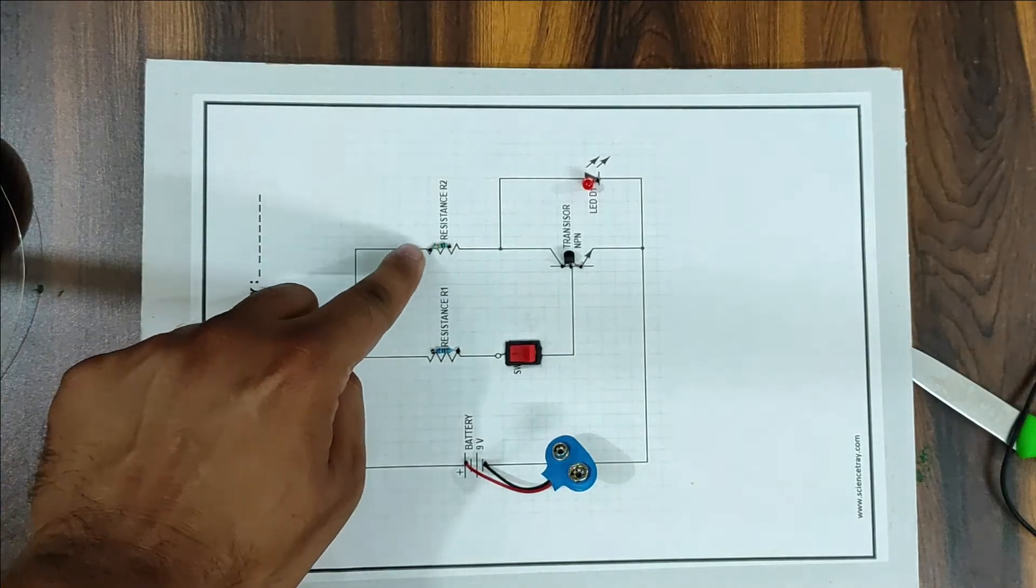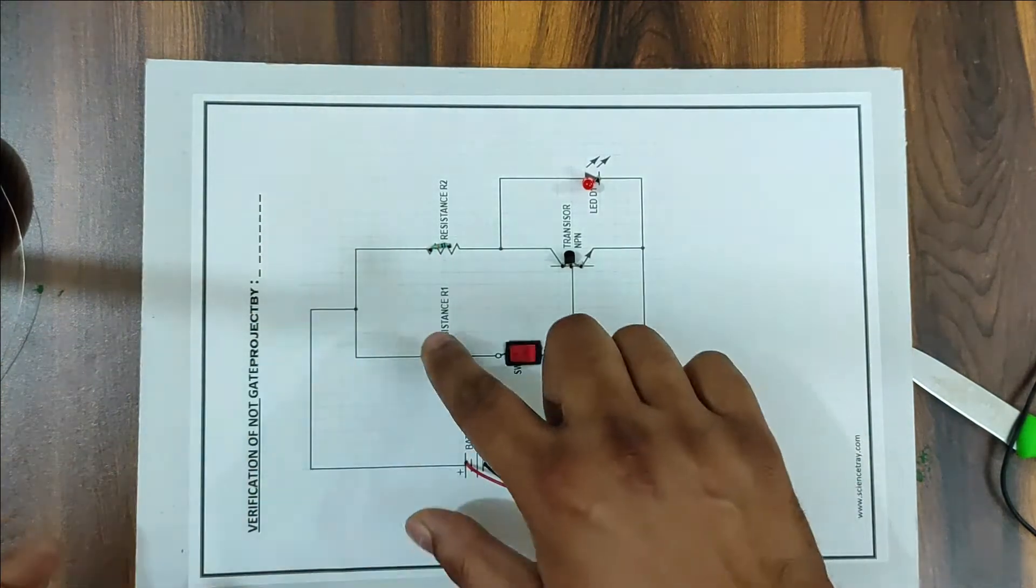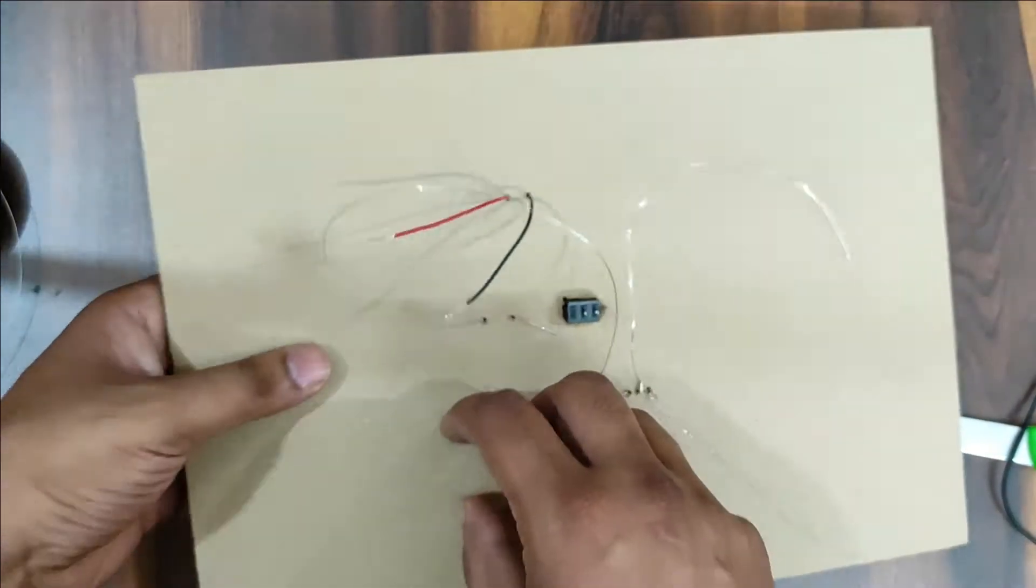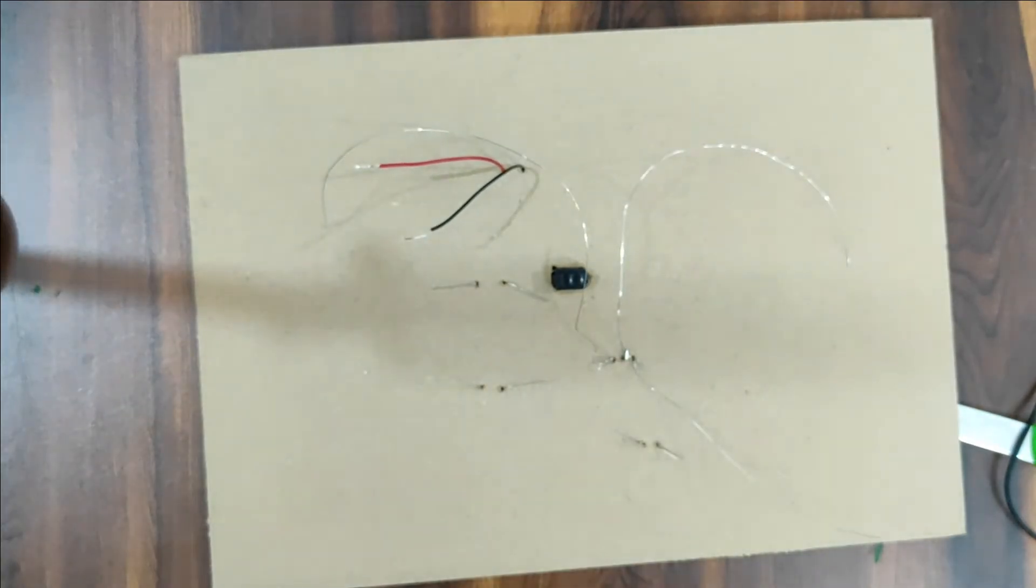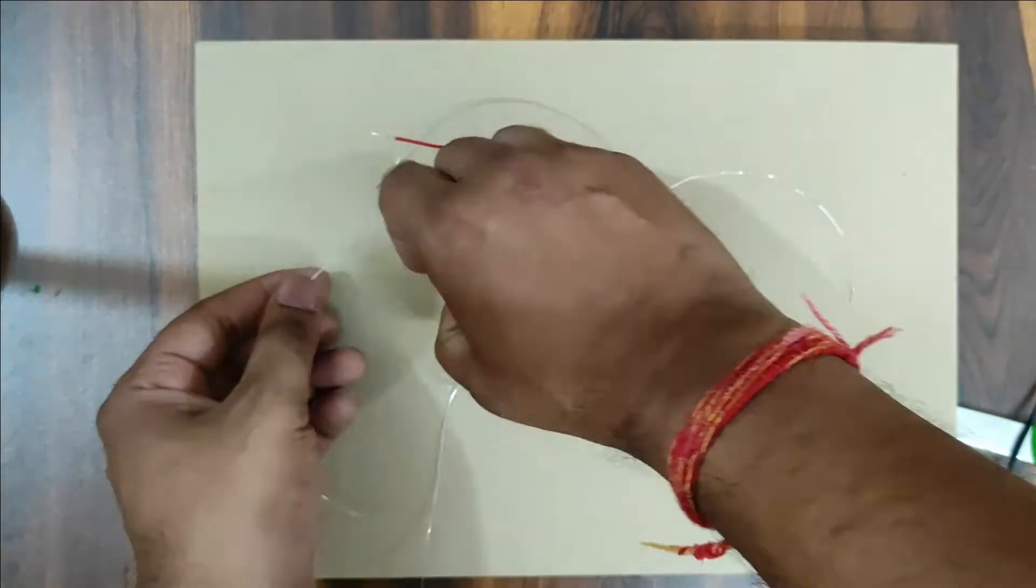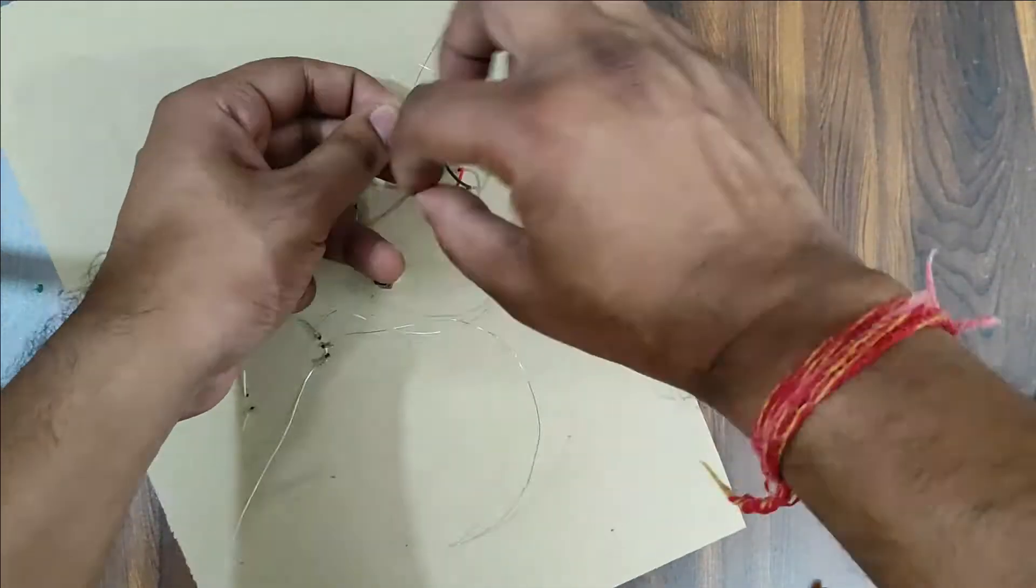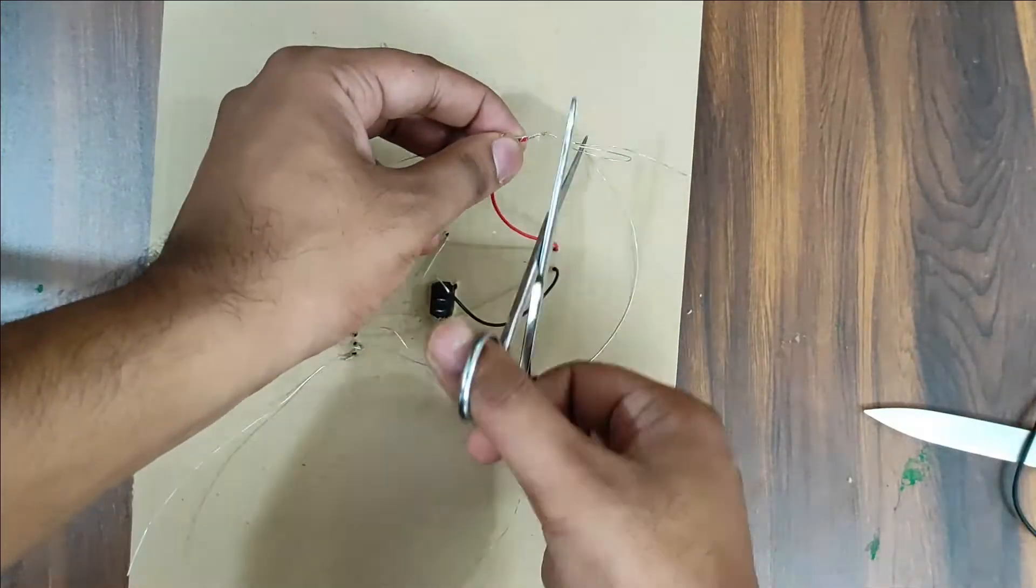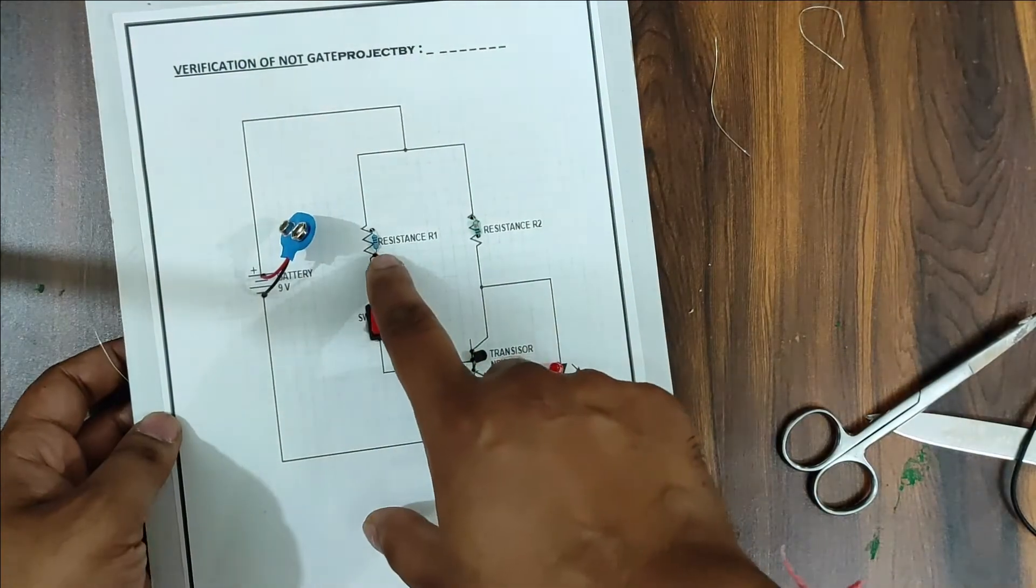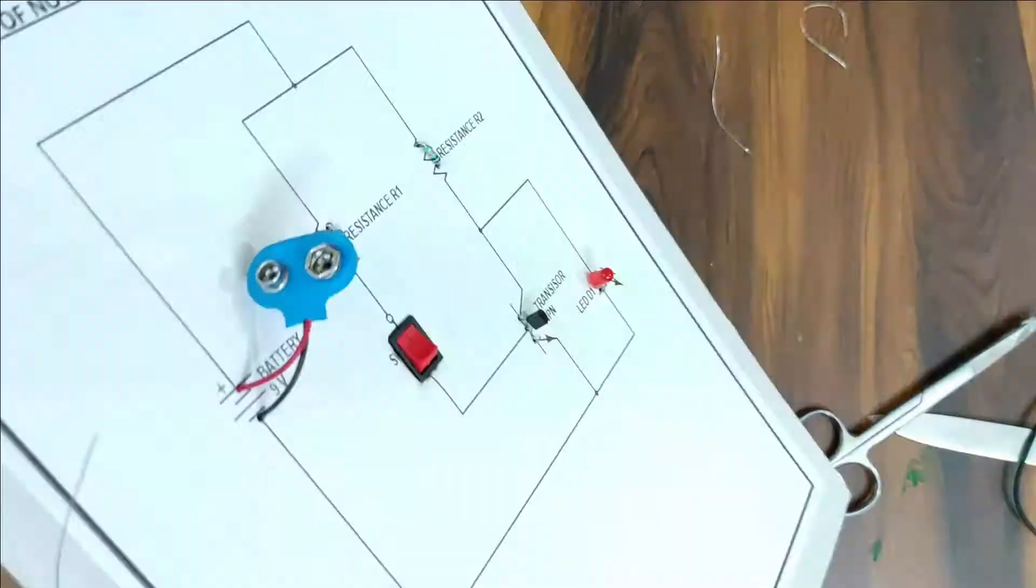We will start the connection. We will see that the resistances are connected. First of all, we will connect both the resistances to the positive. Now this resistance, 330 ohms, is connected to the connection.